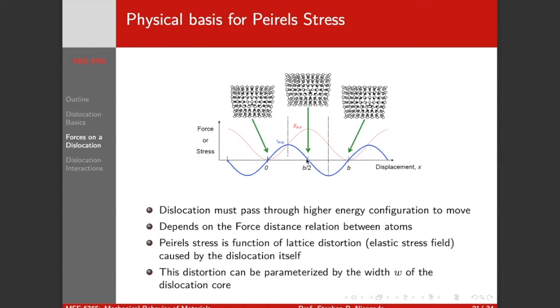I have an unstable equilibrium where I momentarily have zero force, but I'm in the highest energy configuration. So it's going to want to snap back this way or that way to my minimum energy configuration. So the Peierls stress is a function of the lattice distortion caused by the dislocation itself, and we can parameterize this distortion by the width of the dislocation core.